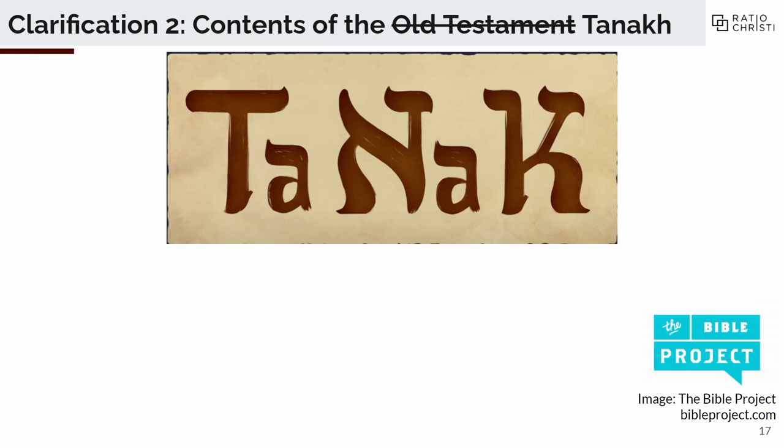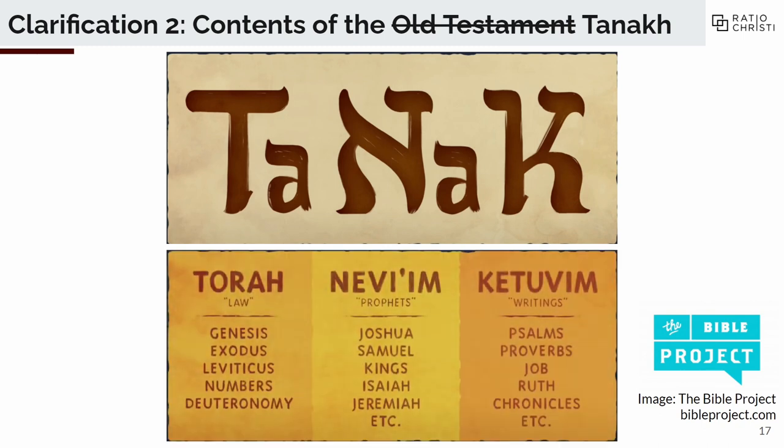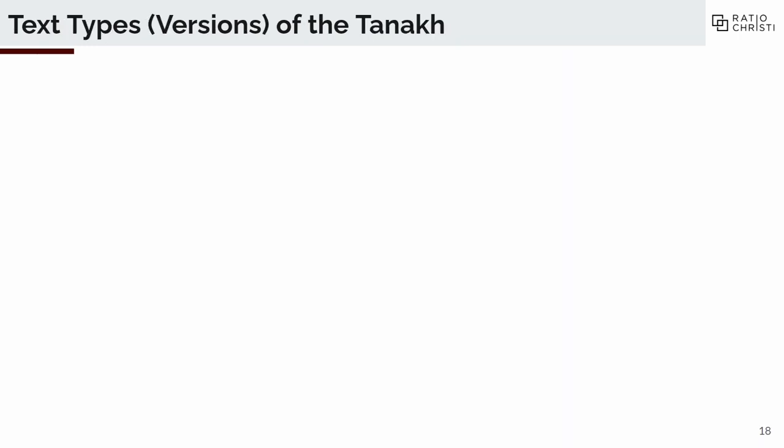We're going to get rid of the term "Old Testament" — it's a pejorative and lame term. Why would we say old? There's nothing old about it. Instead we'll use the term Tanakh, which is what the Hebrew or Jewish people use. It comes from an abbreviation: Torah, Nevim, and Ketuvim. The first five books of the Bible are called the Torah. Another group is the Nevim, or the prophets. And Ketuvim is a collection of writings. The contents are the same as the Protestant Old Testament, so it does not include the Deuterocanonical books — we'll talk about that later in the semester.